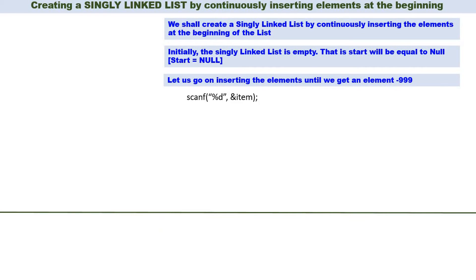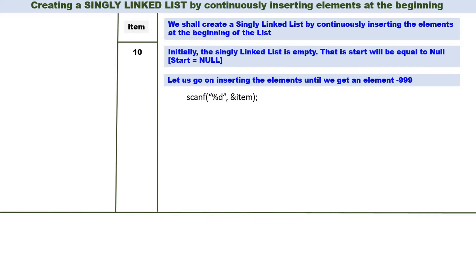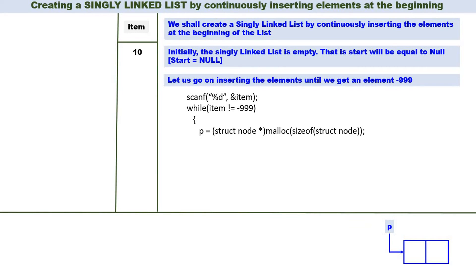Let us see the operation. Now scanf item — let us read the value of item. First item is 10. While item is not equal to minus 999, you should create the linked list. When item is equal to minus 999, you should come out of the while loop, meaning we stop the creation. Now 10 is not equal to minus 999, therefore create a new node. We have created a new node which is pointed by P. P is equal to struct node star malloc size of struct node.